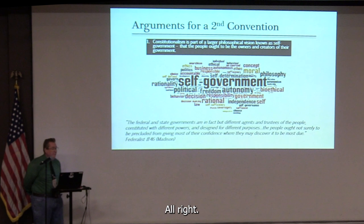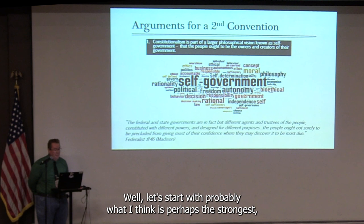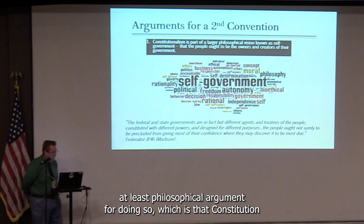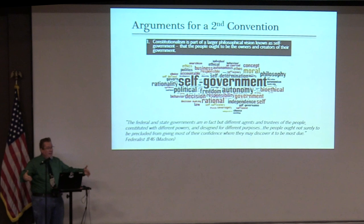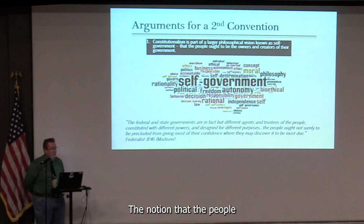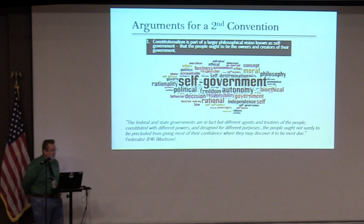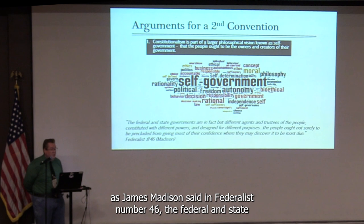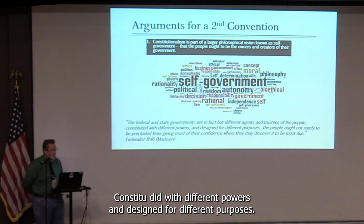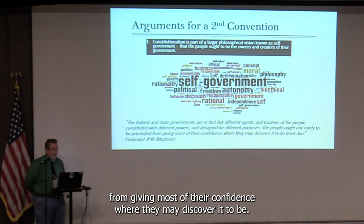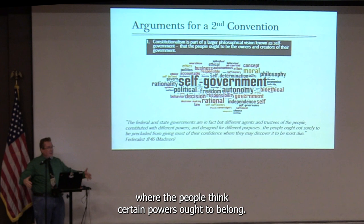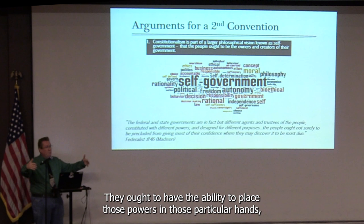What about arguments for having a constitutional convention? Perhaps the strongest philosophical argument is that constitutionalism — specifically delineating the role, limits, and powers of government — is part of the larger vision of self-government: the notion that the people ought to be the owners and creators of their own government. As James Madison said in Federalist Number 46, the federal and state governments are 'different agents and trustees of the people, constituted with different powers and designed for different purposes.' The people ought to have the ability to place powers where they think those powers belong.